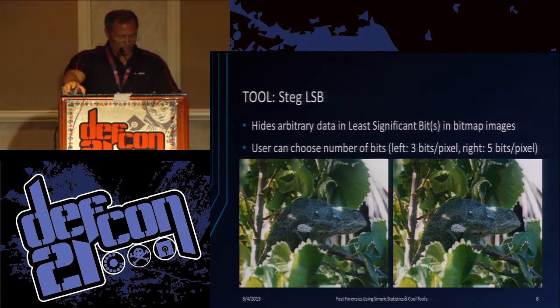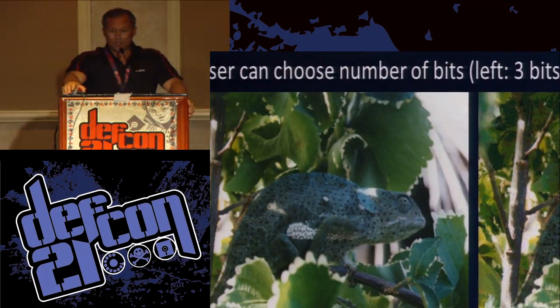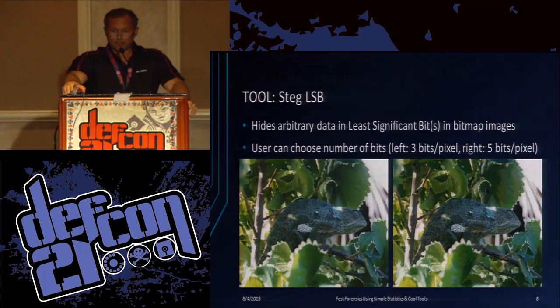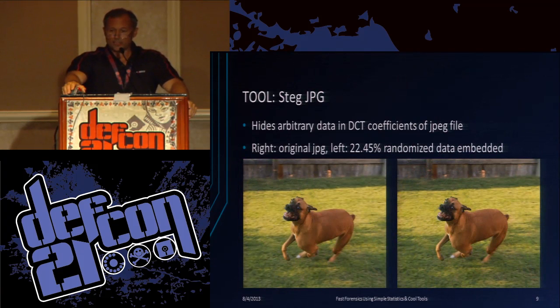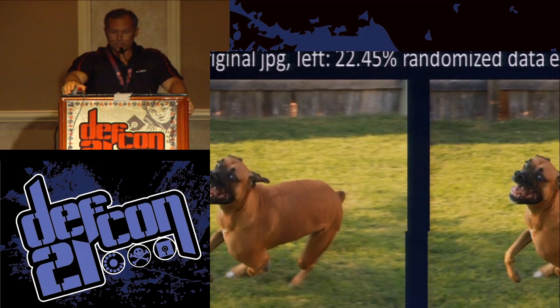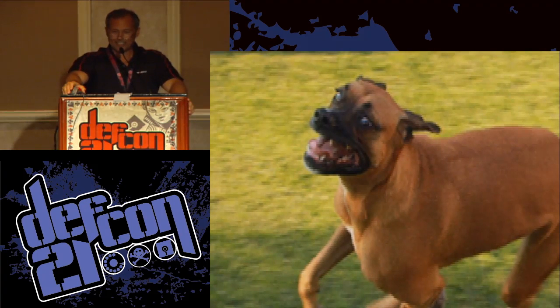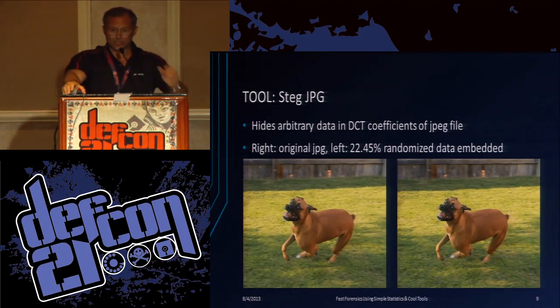Here's a steg LSB tool. This one hides in the least significant bit, which is common. This one has five bits hidden. So at first glance, if you didn't see the original, you might not notice. This one hides in JPEGs — that's also on the CD. That's my dog. You can't see any artifacts between the original and that one, so you've got that tool on your CD as well. We'll show you how you can detect that.